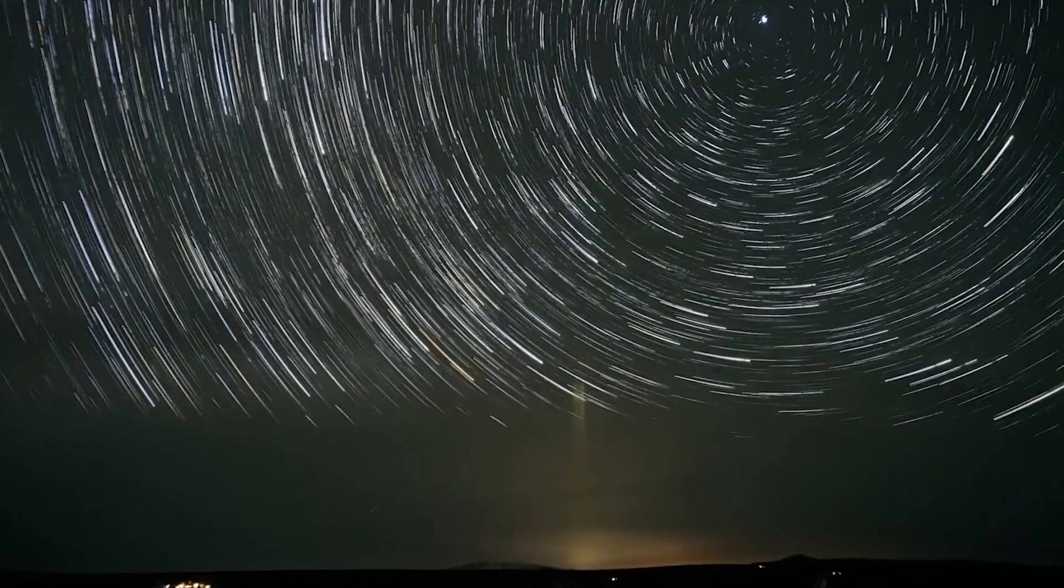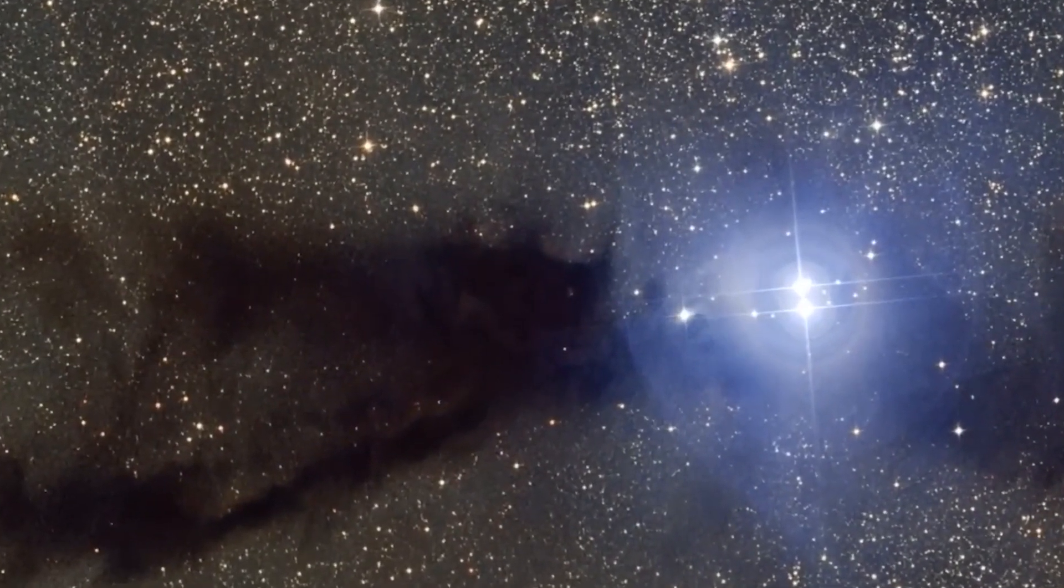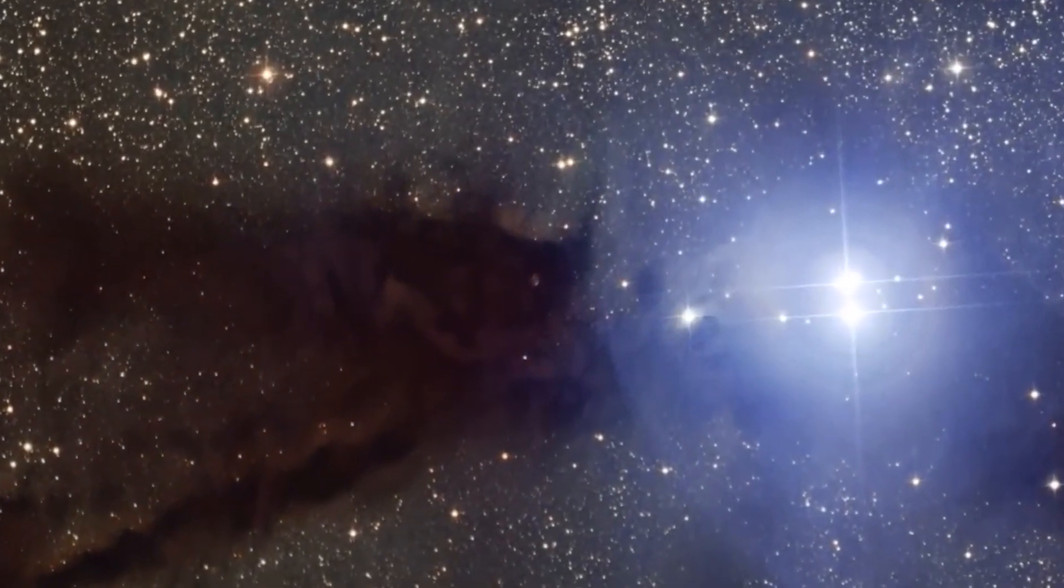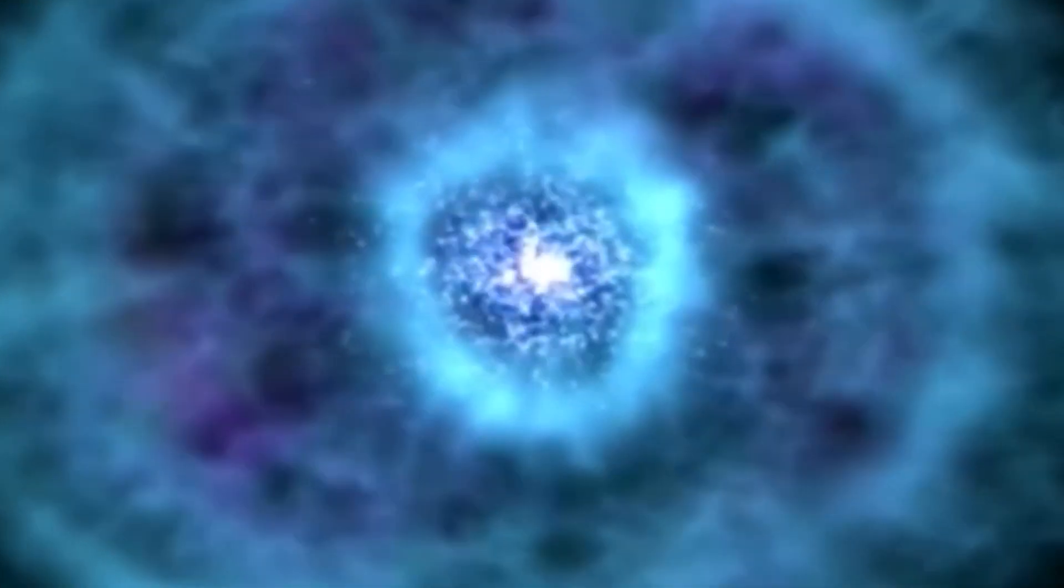Supernovae are classified into Type 1 and Type 2, with Type 2 being more common in massive stars. Type 1 supernovae occur in binary star systems, with a white dwarf. The explosion is triggered when the white dwarf accretes enough mass to reach a critical limit, leading to a nuclear fusion reaction.